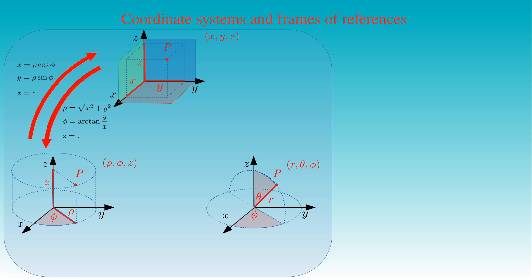Some curvilinear coordinate systems have a point set where the coordinates are undetermined — these points are called coordinate singularities. In the cylindrical coordinate system the Z-axis is undetermined for the azimuthal angle Phi. This indeterminacy is indicated in the equation expressing Phi as the arctangent of the ratio of coordinate X to coordinate Y: both X and Y vanish along the Z-axis, making their fraction 0 over 0, which is undetermined. At such singular points the cylindrical coordinates must be transformed into the coordinates of another well-behaved coordinate system, for example the rectilinear one.